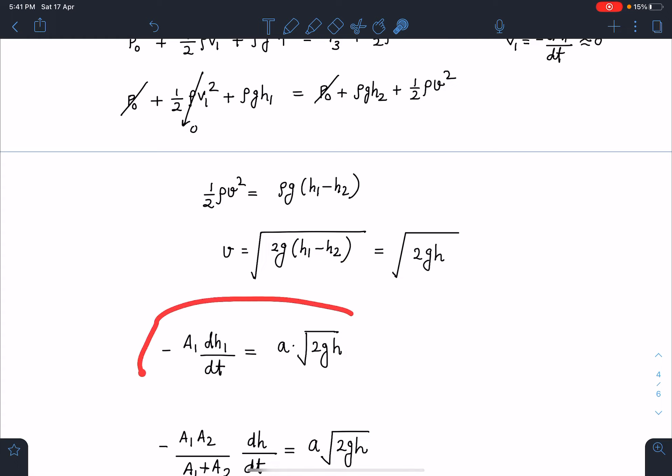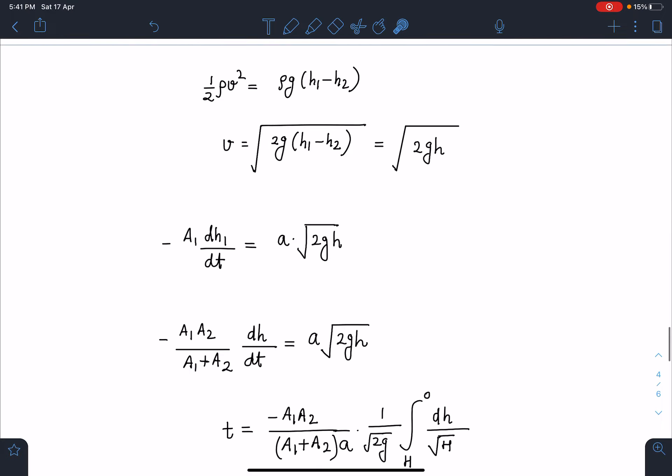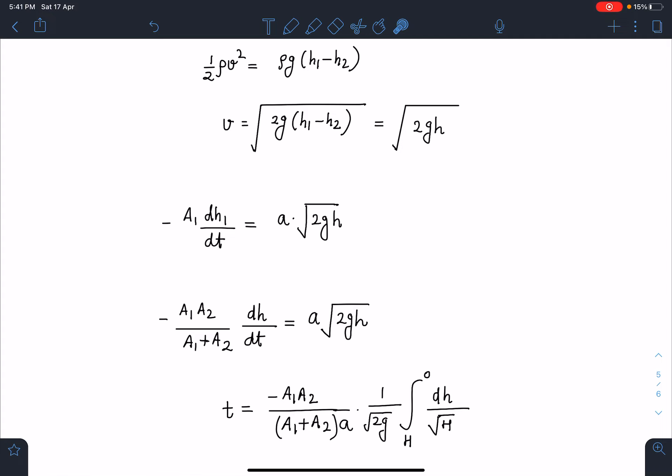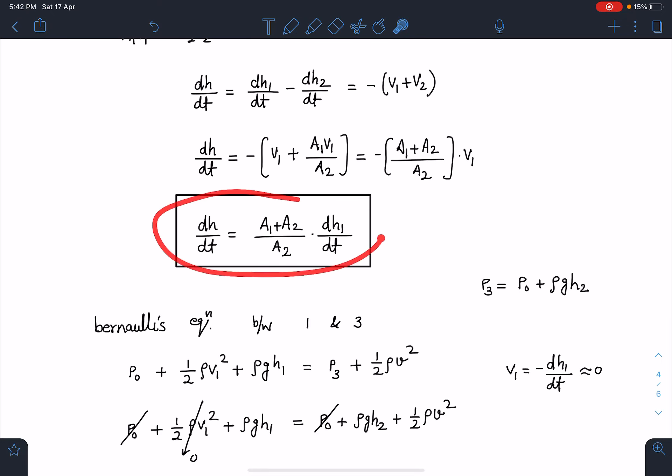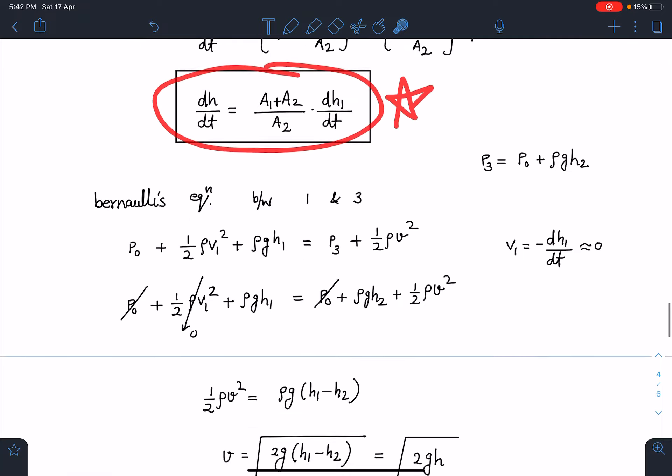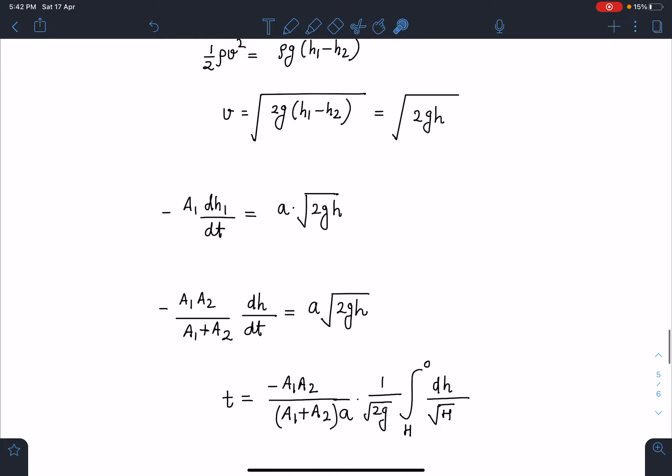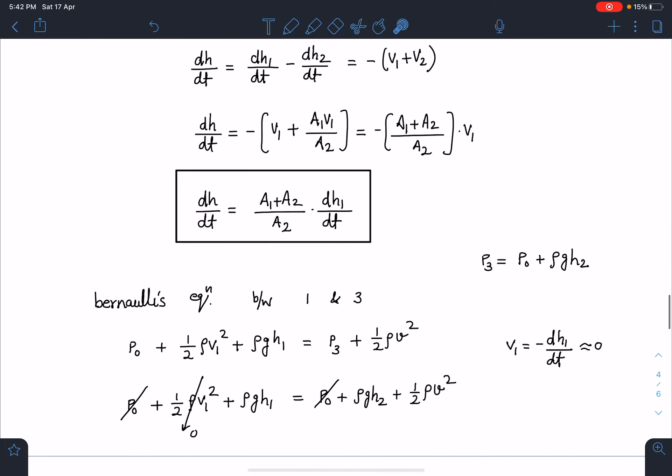Now I can use A1v1 equals small av, so A1 is A1 itself, v1 is minus dh1/dt, and this is a times √(2gh). When I substitute values of dh1/dt, I am substituting in terms of this height difference h. You can see here by using this relation I am substituting here. I hope it is clear to you. So dh1/dt from here, you can see dh1/dt is A2 times dh/dt divided by (A1 + A2). That value when I substitute here and separate the variables, you can see a very nice equation will come.